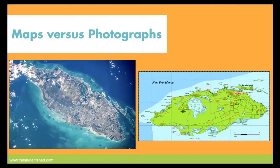You may ask the question: why not just take a picture of an area instead of going through all the trouble of making maps and atlases? Well, a map is different from a photograph taken from the air because a photograph captures virtually everything that there is to be seen on the ground.